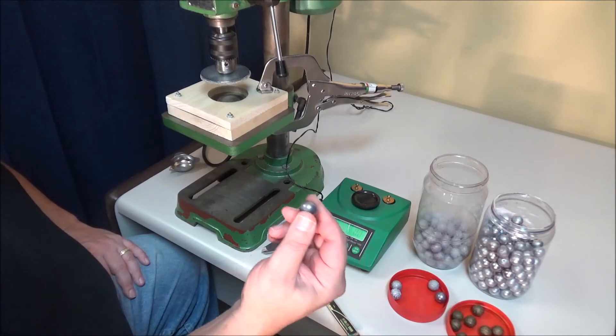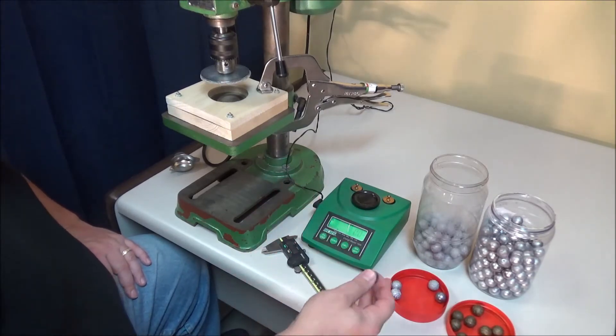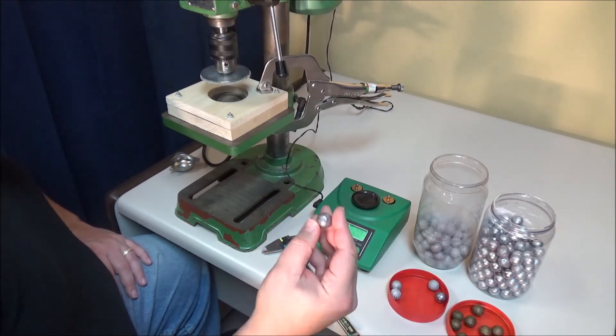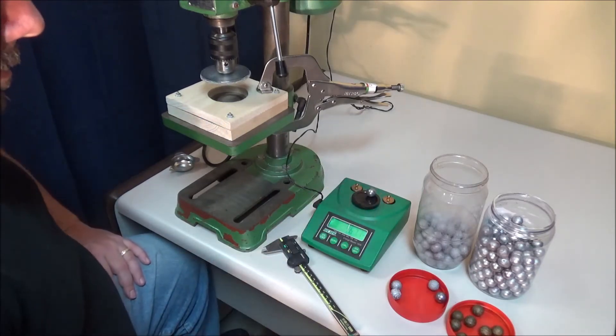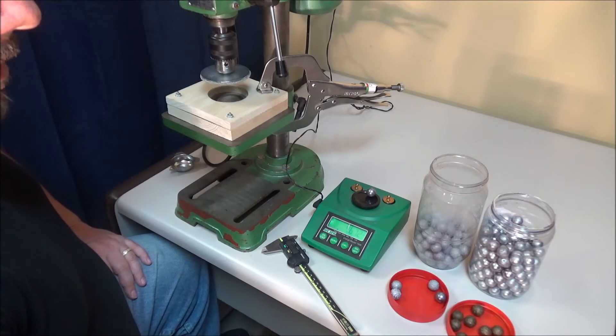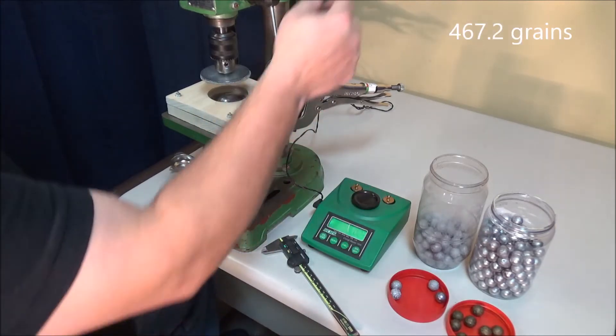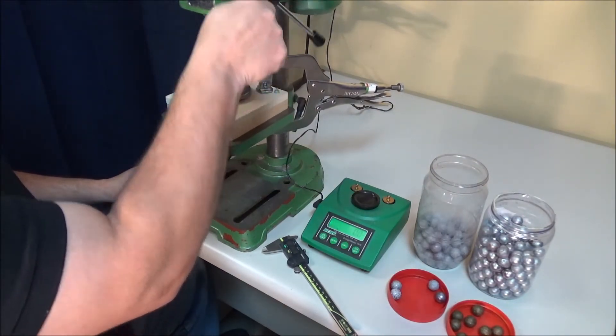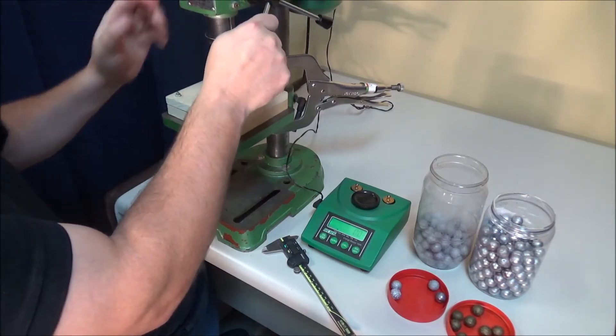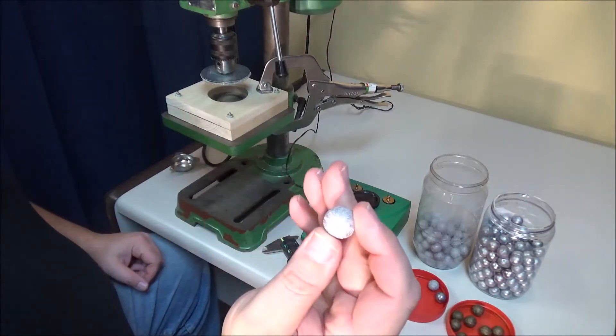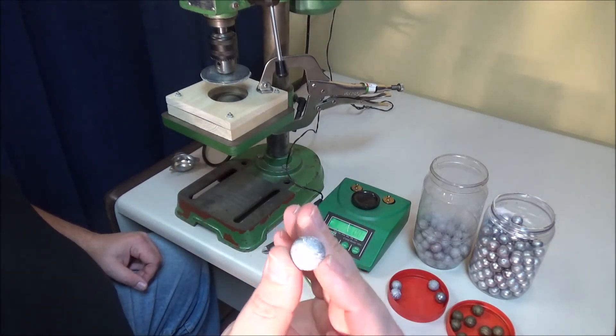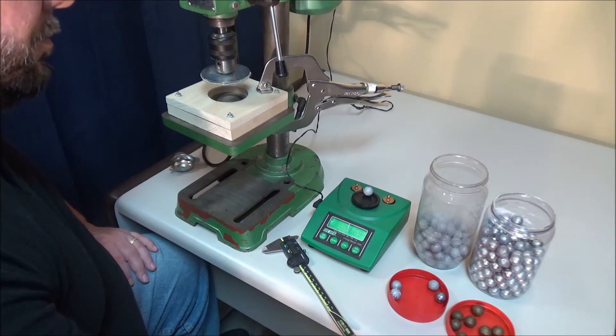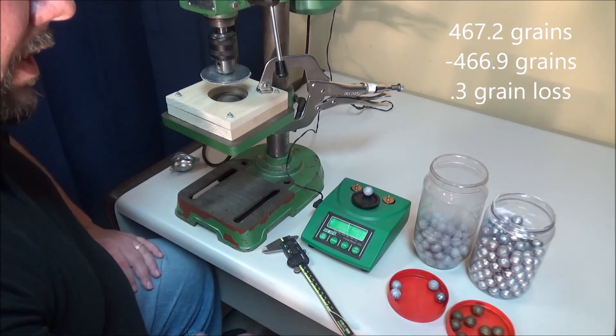Alright, so that's that. So now we've got some lead ones. So let's try lead, pure lead and see how that does. I don't have very many of them because I don't shoot pure lead. I shoot the wheel weights, which is why I got a whole bottle of them, but we'll try. I cast up some pure lead ones, so we'll see how they do. And as expected, they're a little bit heavier. So 467.2. There's the ball. And 466.9, so about 0.3 grains I guess.